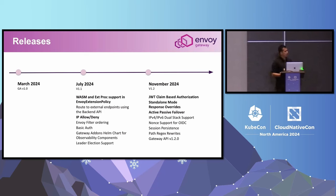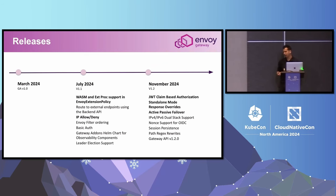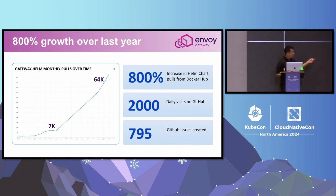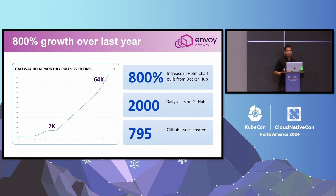Our first few adopters were users building brand new greenfield platforms, but with the last two releases, we're seeing a lot of users migrate to Envoy Gateway for their brownfield platforms as well. Here are some stats to validate that. Helm seems to be the most common way to consume Envoy Gateway — users can deploy charts directly using the Helm CLI or CD tools like Argo CD. This graph, taken from Docker Hub where our charts live, shows monthly pulls increased from 7,000 last November to 64,000 this October. We're also seeing an increase in Slack conversations, 2,000 daily visits on GitHub, and over 700 GitHub issues created, signaling that more users are using Envoy Gateway.